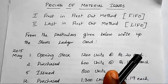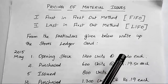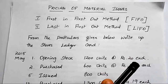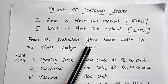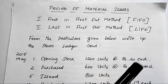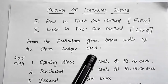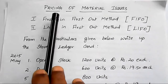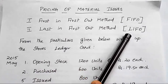In cost accounting, we will have different topics like materials, overheads, and labor cost. The main objective is to find out the exact total cost of production, which depends upon the correct valuation of material used in the production department.